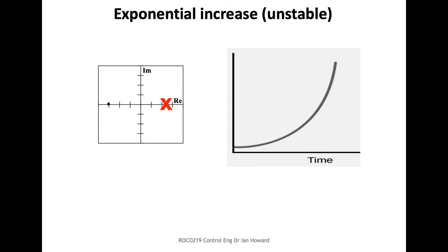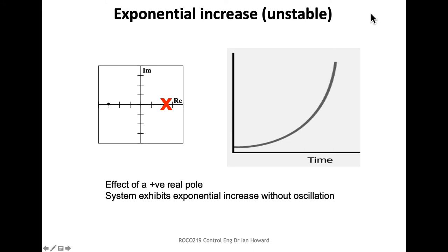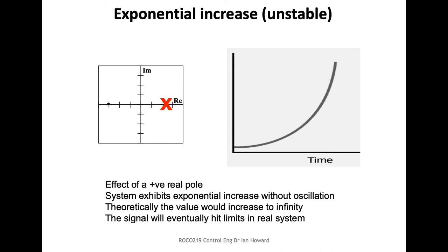Conversely, a pole which is purely real but has a positive value will correspond to an exponential increase. The system starts at some value but tends towards infinity. If there's no imaginary component it will not oscillate, but it will still exponentially try to get to infinity. In a real system — say an op-amp — the output would rise until it hit the rail of the power supply, or in a digital system you'd overflow your number representation. Theoretically, systems which tend towards infinity are unstable.